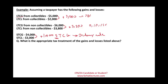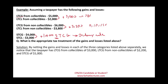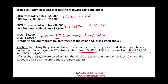What's the appropriate tax treatment? By netting the gains and losses in each of the three categories, we have long-term collectibles of $3,000, long-term non-collectible of $2,200, and short-term capital gain of $1,000. Therefore, the $3,000 is subject to 28%, the $2,200 is subject to 0%, 15%, or 20%, and the $1,000 is subject to the appropriate ordinary tax rate for that individual.